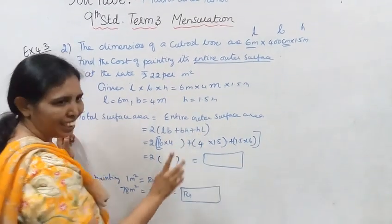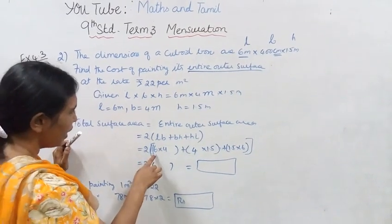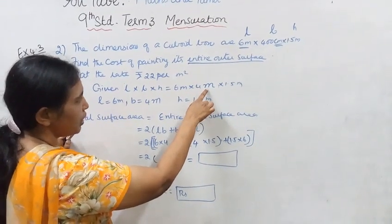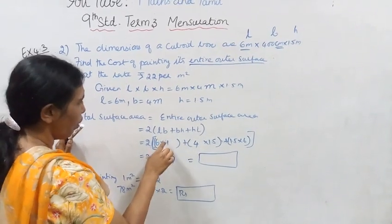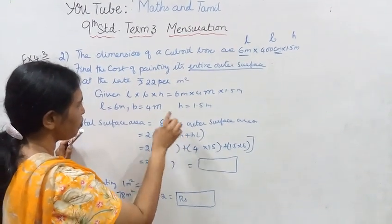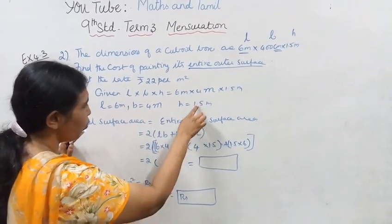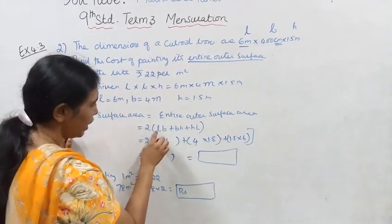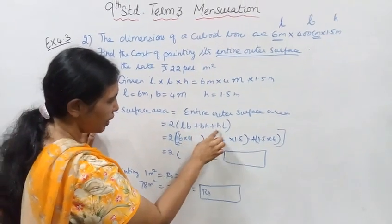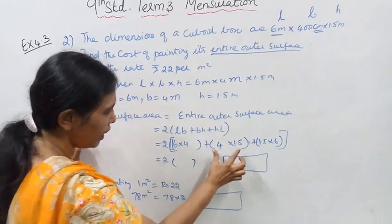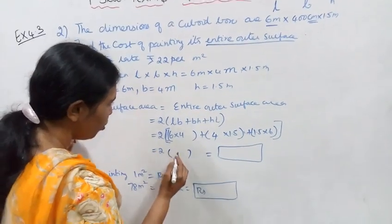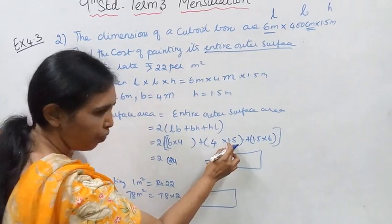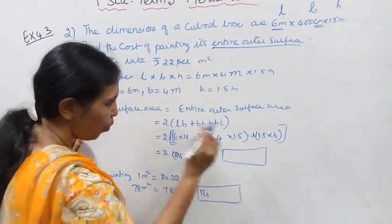Total surface area equals 2 into bracket, 6 into breadth which is 4 meter, so 6 into 4, plus breadth which is 4 into height 1.5, plus height 1.5 into length 6. So 2 bracket, 6 into 4 is 24, 4 into 1.5 is 6.